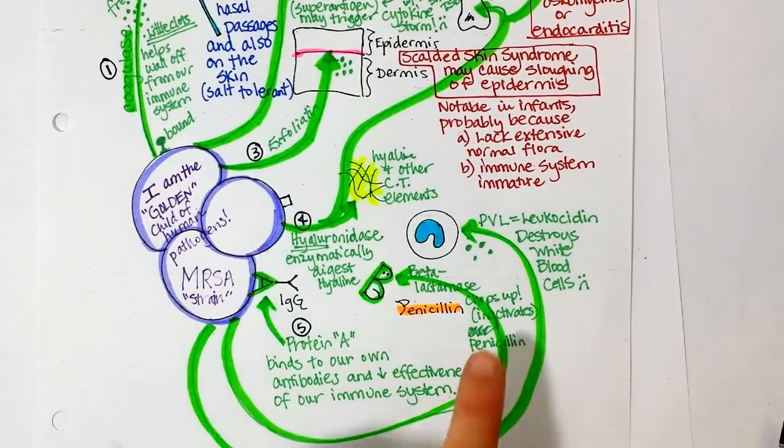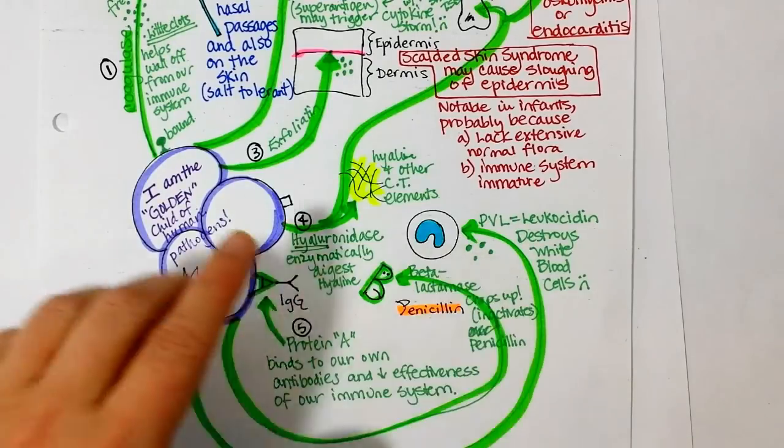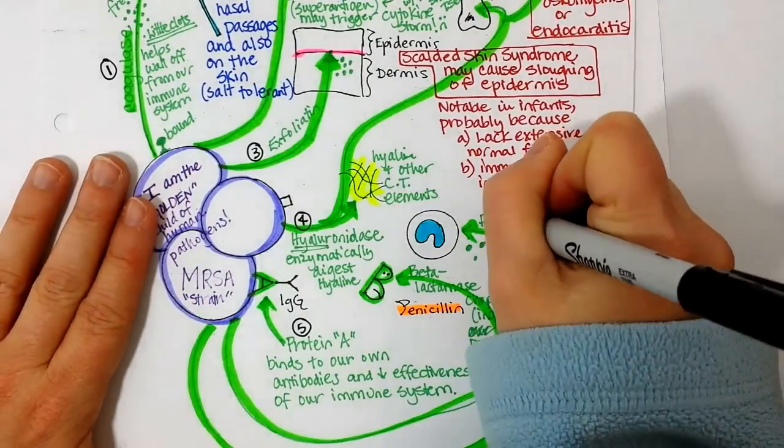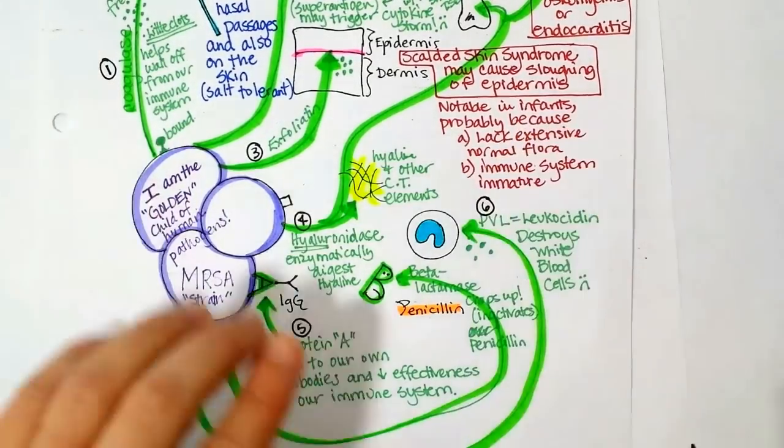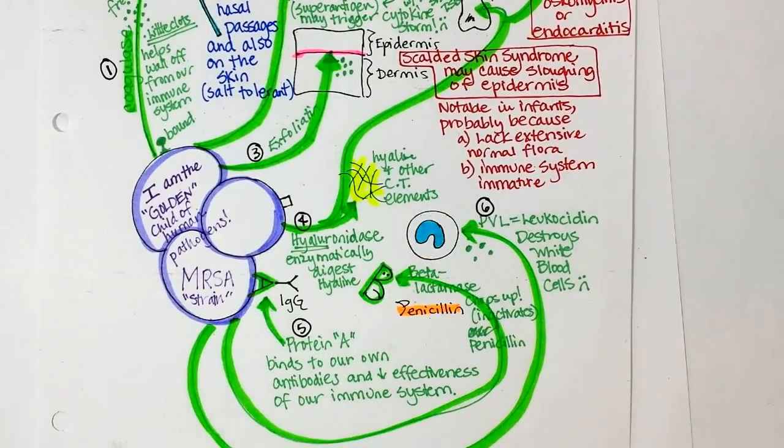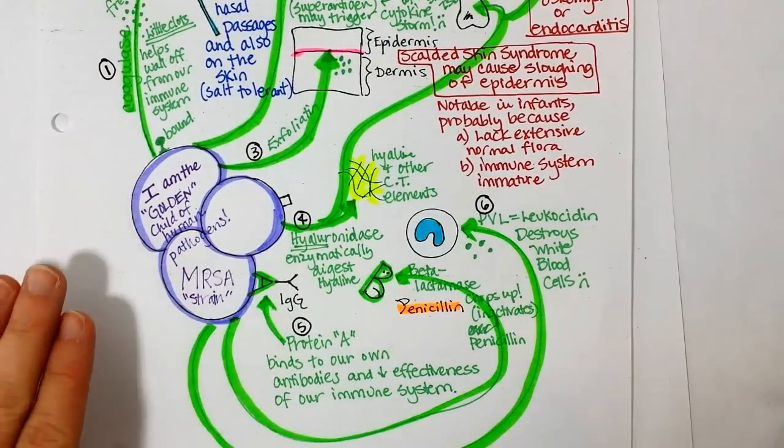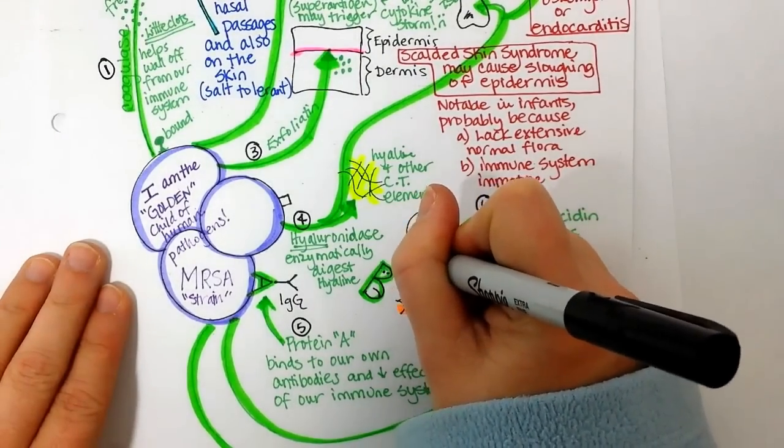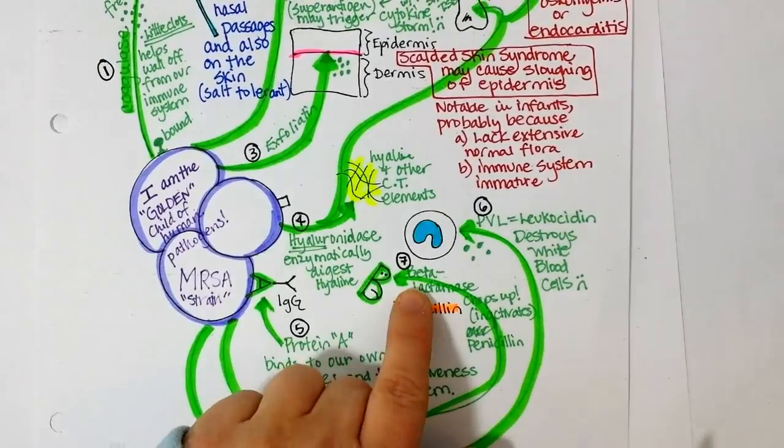Okay, then I talked about PVL, which is a leukocytin. And this is going to damage our own white blood cells. Again, undermining our immune reaction. And then the last one, number seven, is beta-lactamase. That staph aureus can make. And in doing so, it chops up penicillin.